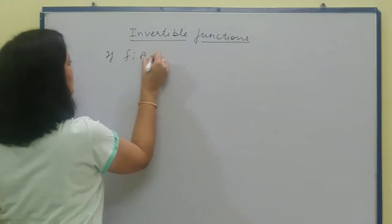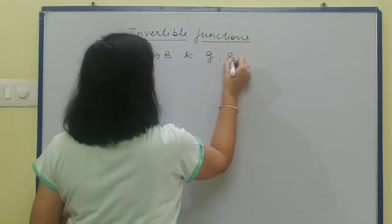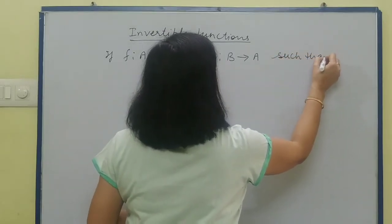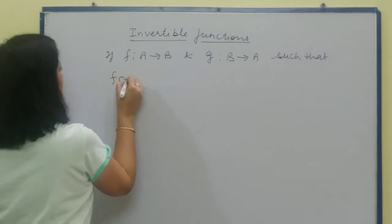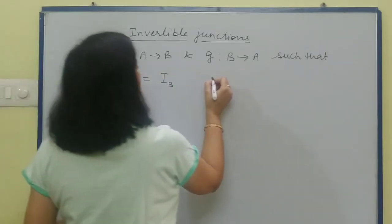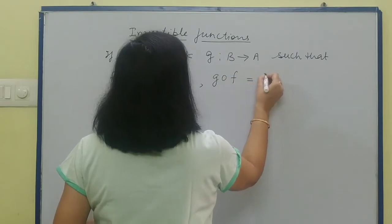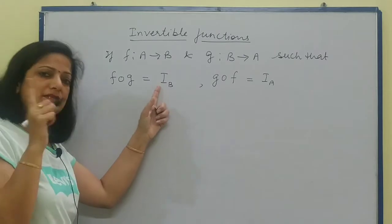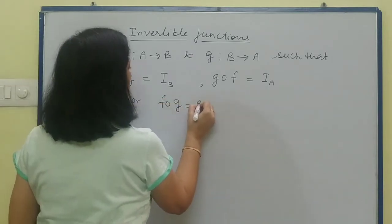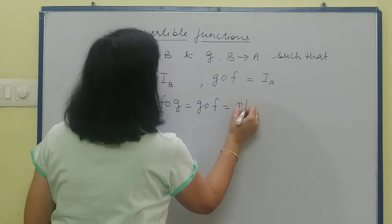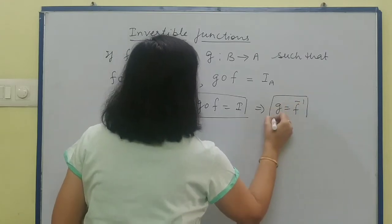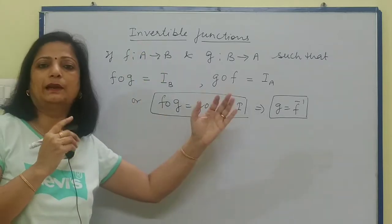For invertible functions, if f from A to B and g from B to A such that f composition g equals identity function in B, and g composition f equals I_A, meaning identity function in set B and identity function in set A. We can say that f composition g and g composition f both equal identity function. This implies that g is f inverse.